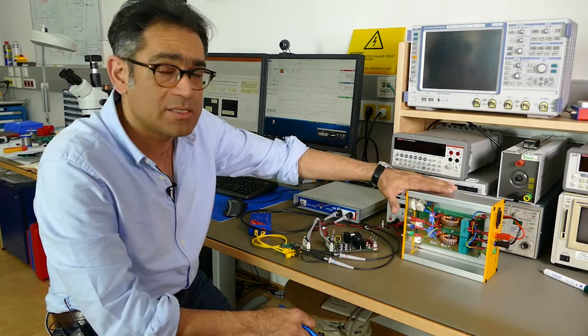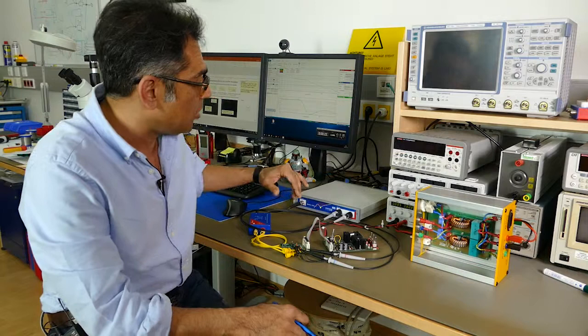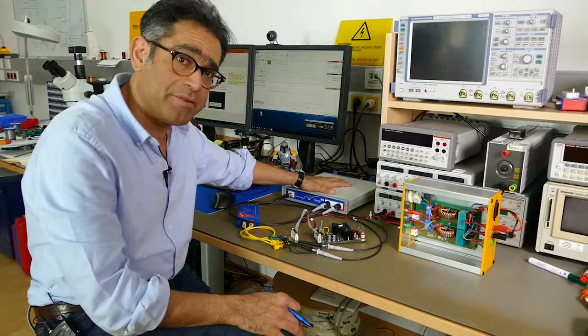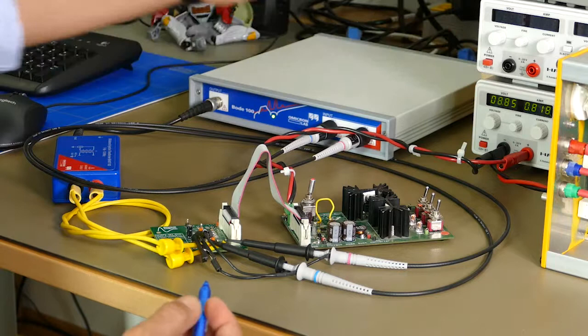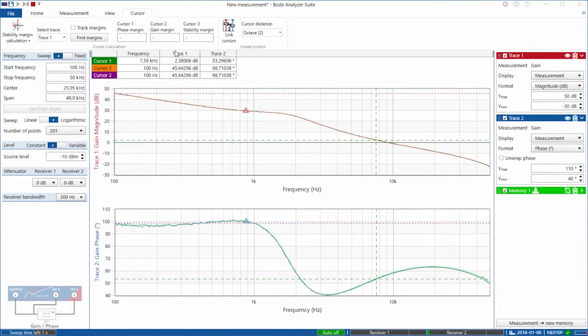You can see that I have got my power supply over here, I have got the Bode 100, I have got the injection transformer and the power supply is being, my buck converter is being powered directly from the bench. And here you can see that I have got the classic look of a beautiful control loop, I have got a crossover frequency of around 10 kHz.